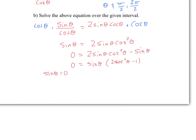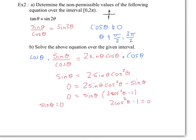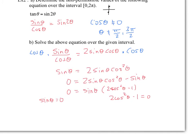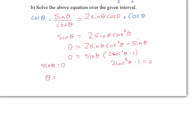We're going to have sine theta equals 0, and 2 cos squared theta minus 1 equals 0. Notice that the interval was 0 to 2π, but we don't include 2π in this case. So theta would be equal to 0 and π. On the other branch, I'm going to bring the 1 over and divide by 2. So you're going to have cos squared theta equals 1 half. You're going to square root both sides to get rid of that square. Therefore cos theta equals plus or minus 1 over square root of 2.